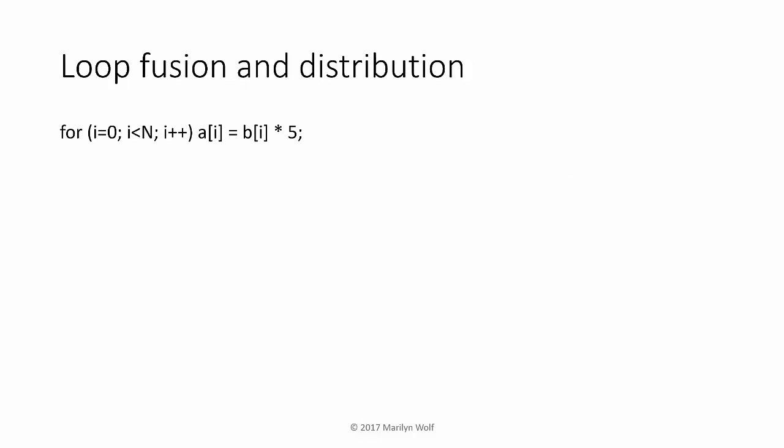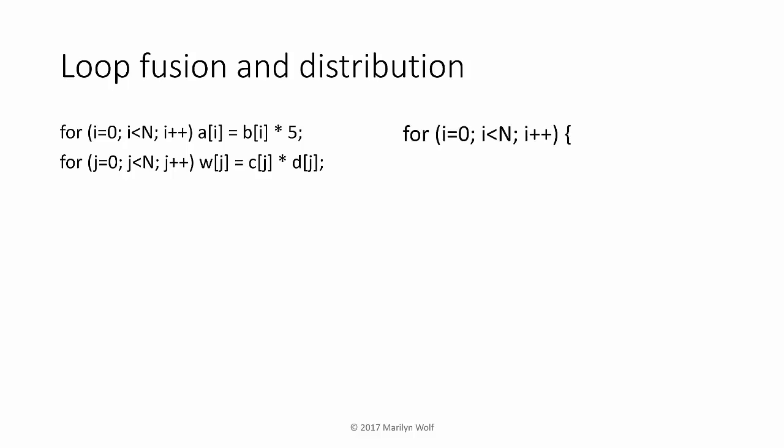Loop fusion allows us to take two loops and combine them into a single loop. Here we have one loop, and a second loop executed the same number of times with its own body. We can combine them into a single loop that executes both bodies, reducing the total loop overhead. Loop distribution is the opposite: we can take a single loop with a complex body and split it into several smaller loops.